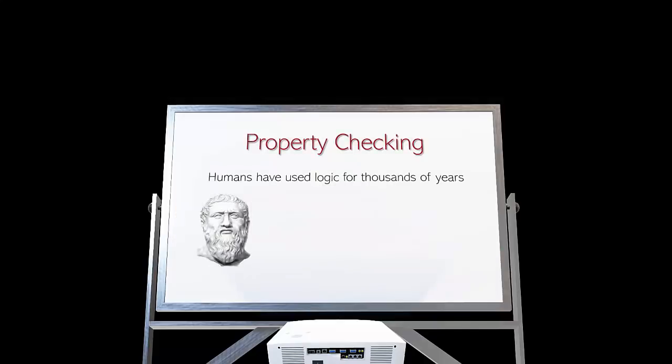So how does property checking work? Before we get into the details, let's understand where it comes from. Humans have been using logic for thousands of years, and logic is the foundation of property checking and formal verification. All men are mortal. Socrates is a man. Therefore, Socrates is mortal. We're all used to this kind of reasoning, and this is exactly how logic is used in formal verification and property checking in particular.